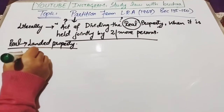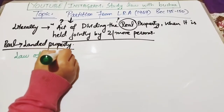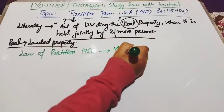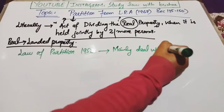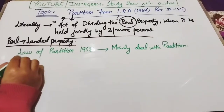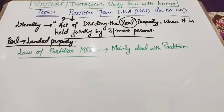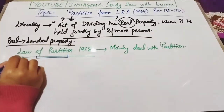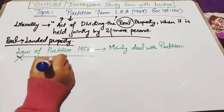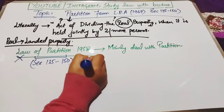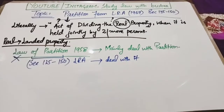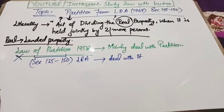Real property simply means landed property — زمینی property. اب جو act partition کے ساتھ deal کرتا ہے وہ ہے Law of Partition Act 1958، جو specifically partition کے matters کے ساتھ deal کرتا ہے۔ لیکن اگر کوئی ایسی situation آ جائے جہاں Law of Partition Act applicable نہ ہو، تو پھر ہم Land Revenue Act کے section 130 سے section 150 کو apply کریں گے partition process کے لیے۔ یاد رہے کہ partition صرف landed property یعنی real property کی ہو سکتی ہے۔